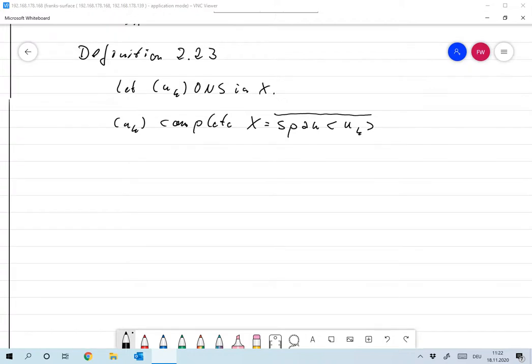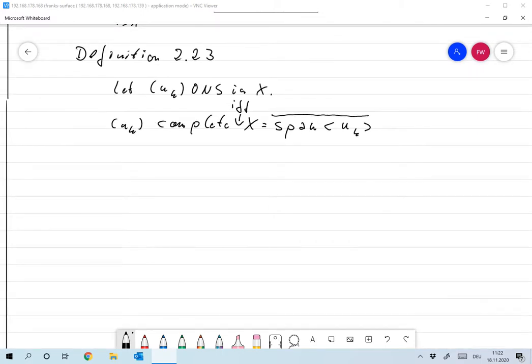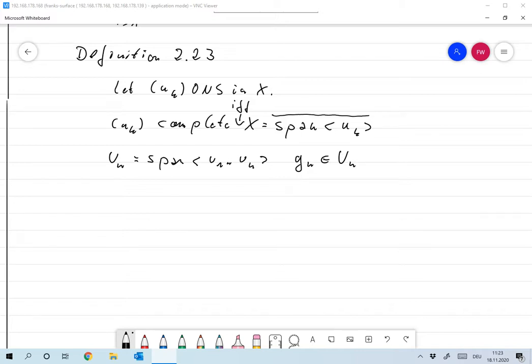That's equivalent to the following: define UN as the span of U1 to UN, then we can find a sequence GN with GN in UN such that GN converges towards U and that's for all U in X. So we can approximate every U with finite sums.